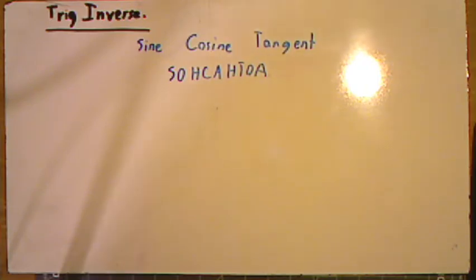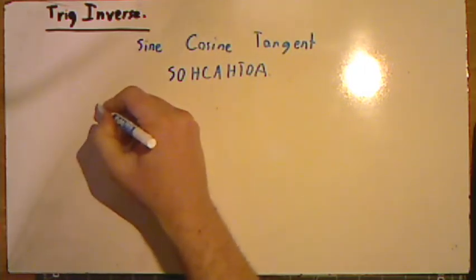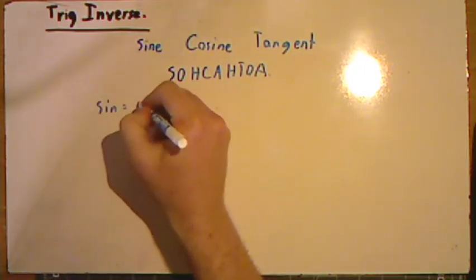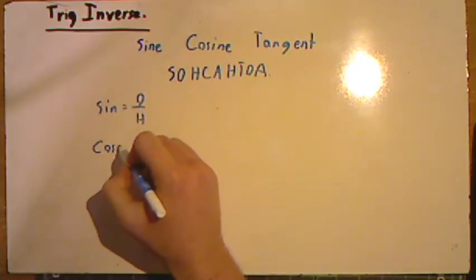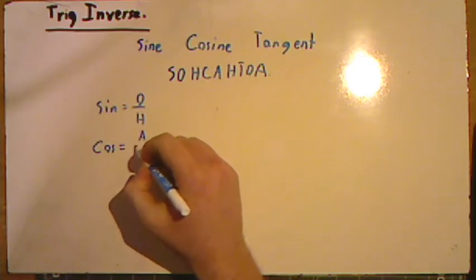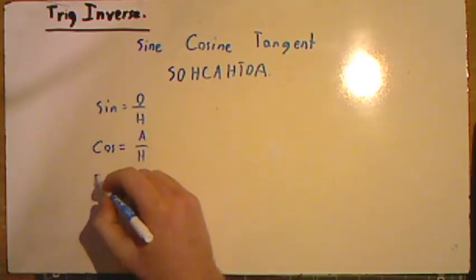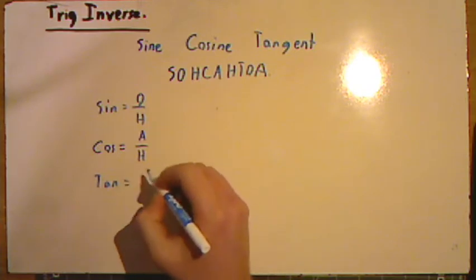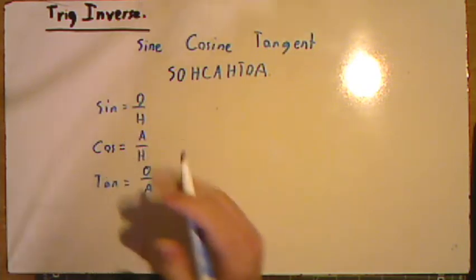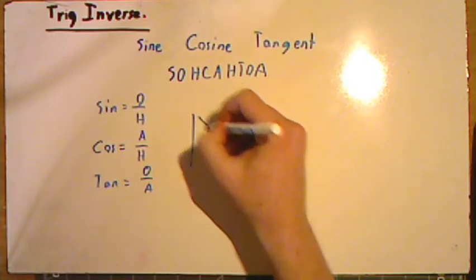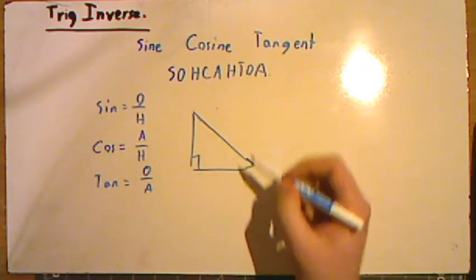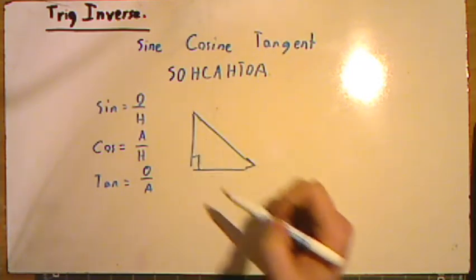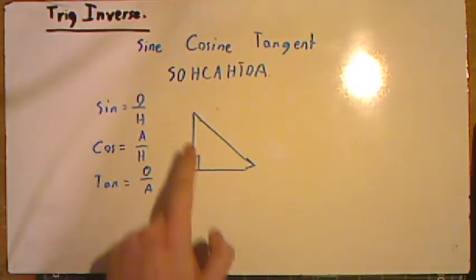So in this case, we know that SOHCAHTOA stands for sine is equal to opposite over hypotenuse, cosine is equal to adjacent over hypotenuse, and tangent was opposite over adjacent. And these are all in reference to a right triangle and its sides, where based on the angle that we choose, we would have an adjacent side or an opposite side accordingly, as well as a hypotenuse.